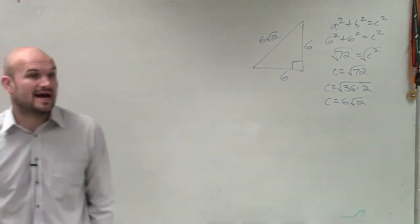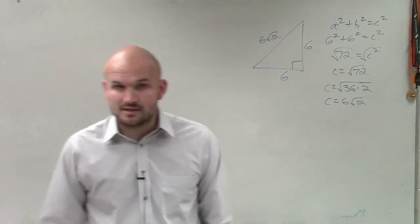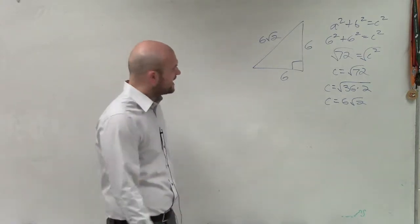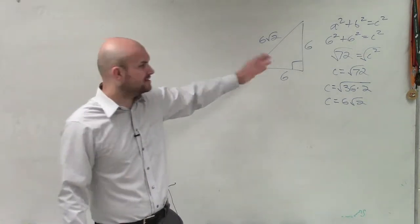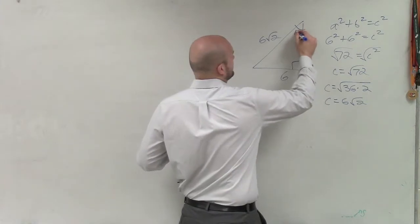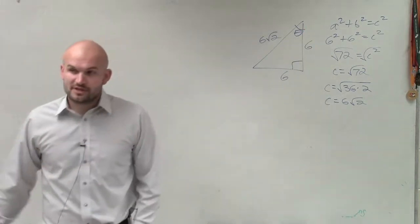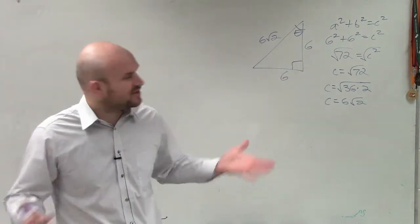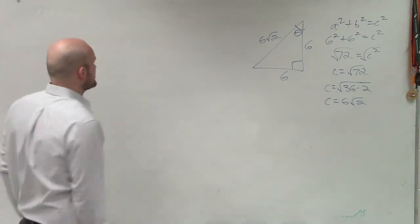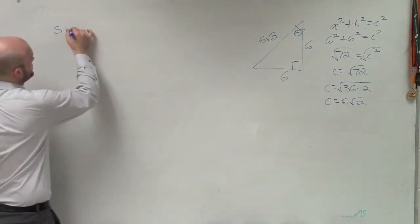So now I have a triangle with a hypotenuse and two legs. Here's theta. There's your angle. So now what we're going to do, and it doesn't really matter because the two legs are the same, but now we need to go through our trigonometric functions.